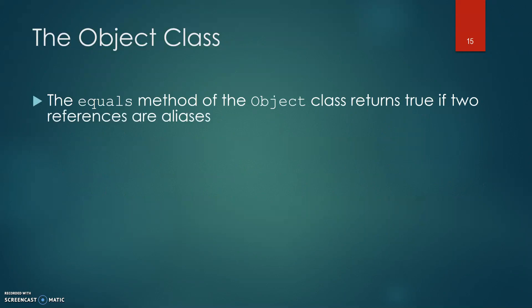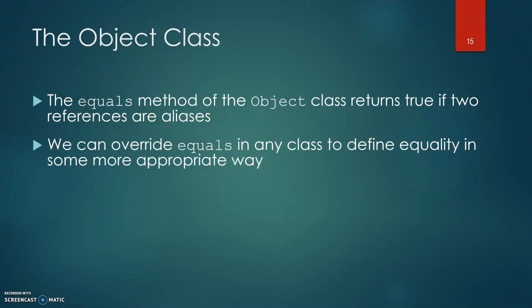The equals method of the Object class returns true if two references are aliases. We can override equals in any class to define equality in some more appropriate way.